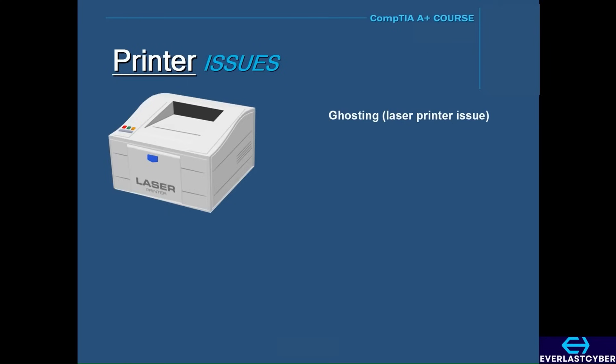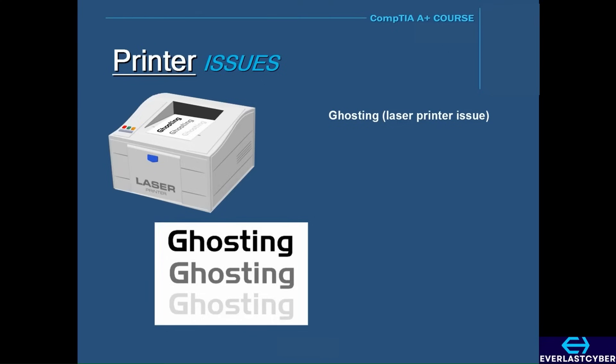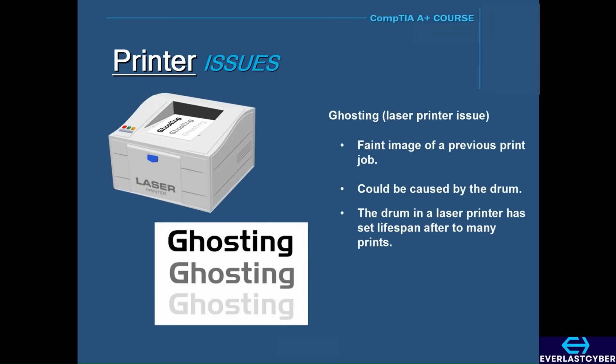Ghosting is another problem that can happen with laser printers. Ghosting is when you see a faint image of a page that you previously printed, and you see the same image on a newly printed page. This is usually caused by the drum or the fuser. The drum on the laser printer has a lifespan after so many prints, and then you have to replace it. So you can try replacing the drum, but if you still see the same problem after you replace the drum, then the problem could be the fuser. So then the fuser would have to be replaced.